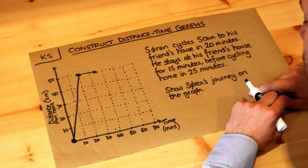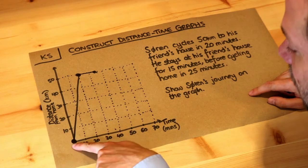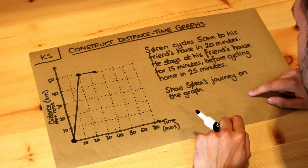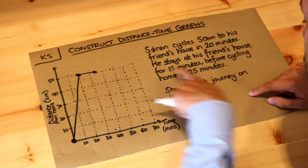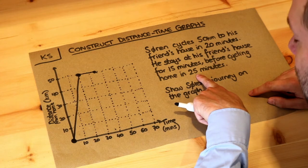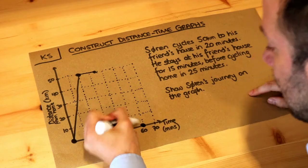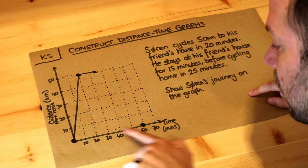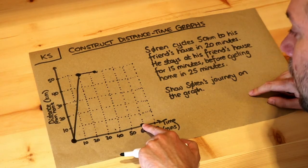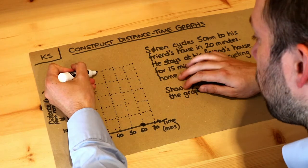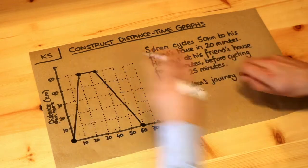Then it says he cycles home in 25 minutes, so after 25 minutes he'll be at home — his distance will be zero from home. We're at the 35-minute mark, he cycles for 25 minutes, and 35 plus 25 is 60 minutes. So he's going to be at home at 60 minutes — at 60 minutes his distance on the vertical axis is zero. We just join this up with a straight line, and that is the completed graph.